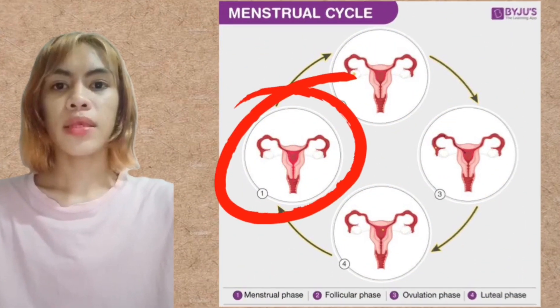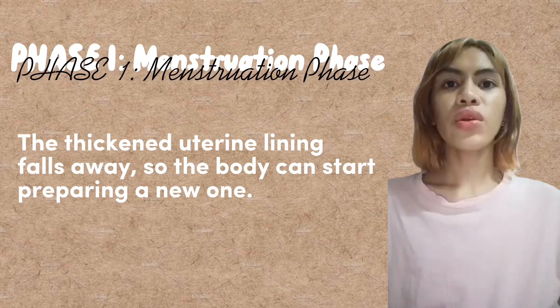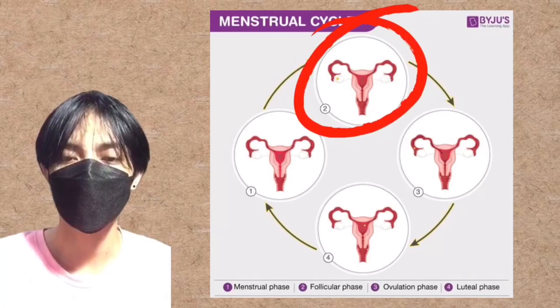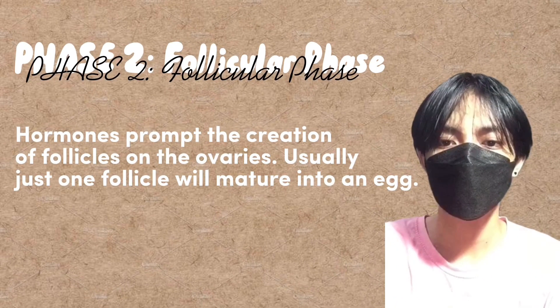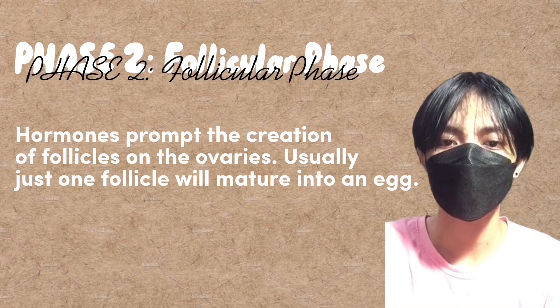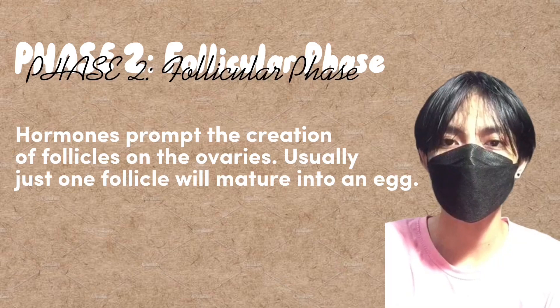Phase 1: Menstruation phase. The uterine lining falls away so the body can start preparing a new one. Phase 2: Follicular phase. Hormones prompt the creation of follicles on the ovaries. Usually, just one follicle will mature into an egg.